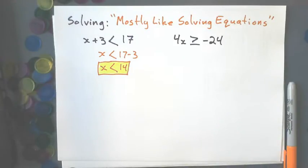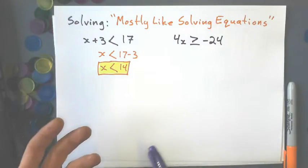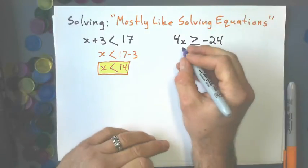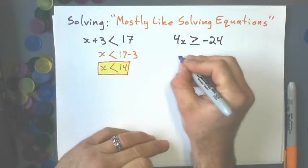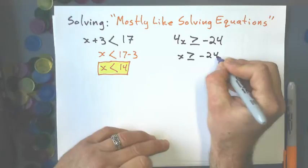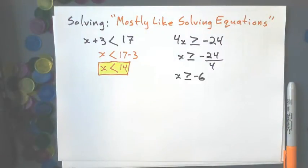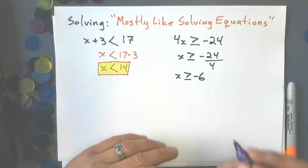And then in my next example, I have 4x ≥ -24. Again, treat it like you would an equation. So you'd say, okay, I divide by the coefficient. So x ≥ -24 divided by 4, and I get a solution of x ≥ -6.